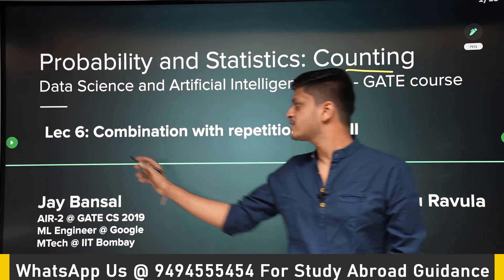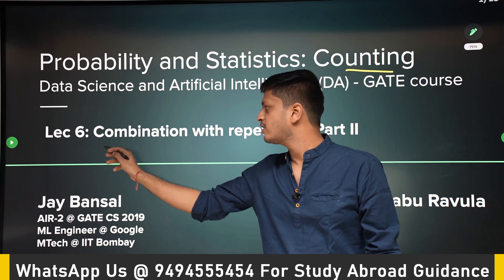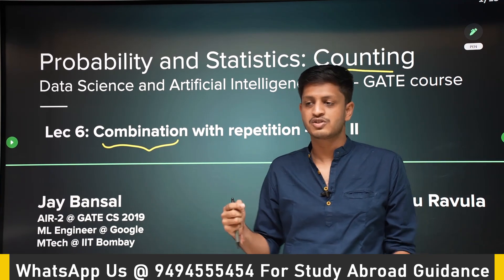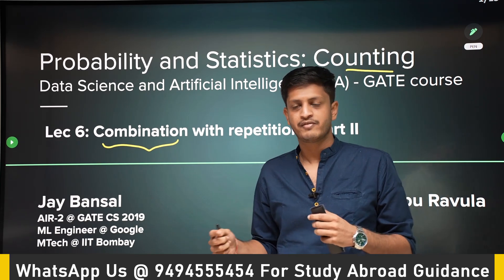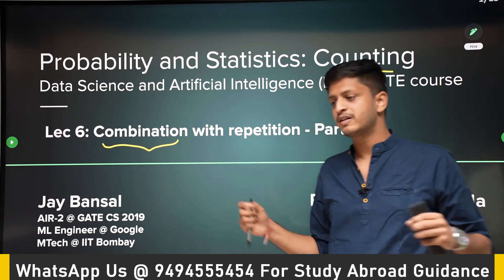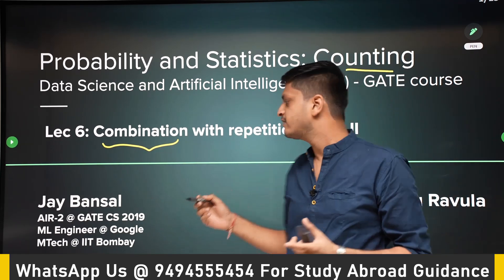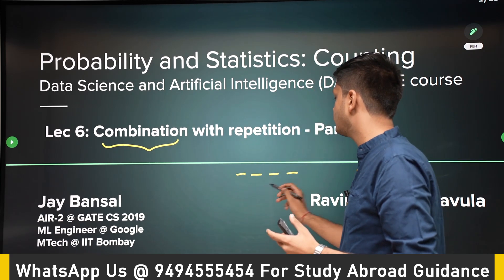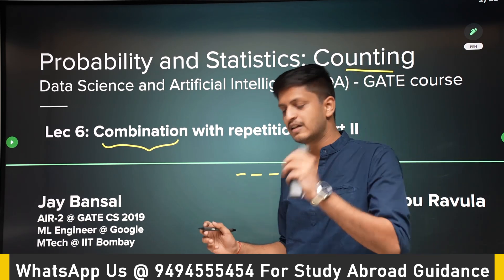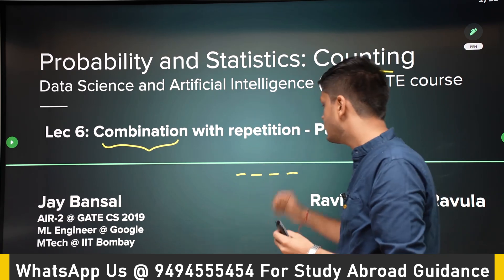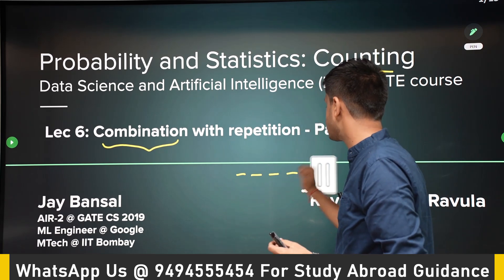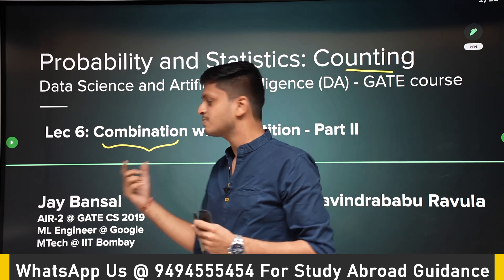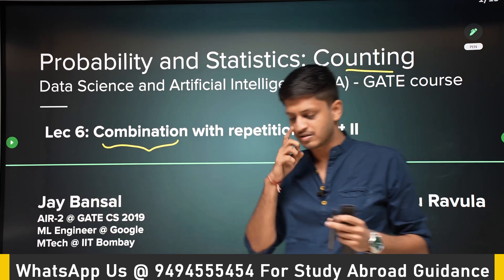The more difficult problem to solve is combination with repetition, because counting the number of selections is slightly difficult. We tend to over-count. Whenever arrangement is important, that problem can be solved by making r spaces with n options to choose. But combination, the selection problem, is slightly trickier — that's why this lecture focuses more on combination with repetition.